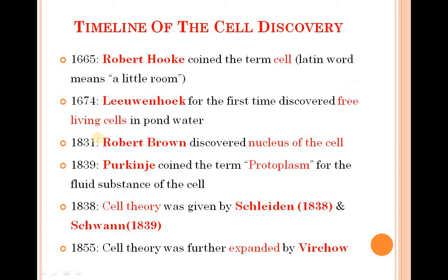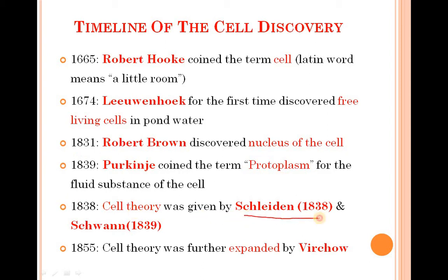Then in 1839, the word 'proto' — meaning primitive — and 'plasm' meaning fluid-like substance gave us 'protoplasm'. Then in 1838, cell theory was given by Schleiden and Schwann. Schleiden worked on plant cells and Schwann worked on animal cells. But they were not able to explain how cells further expand. Then in 1855, this cell theory was expanded by Virchow.